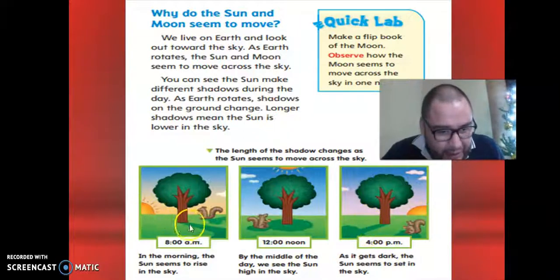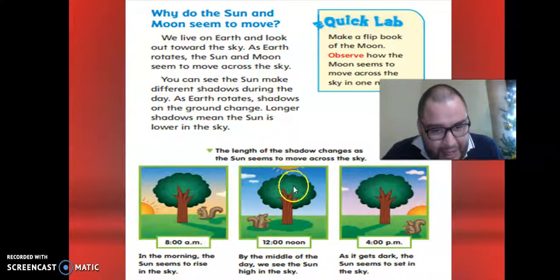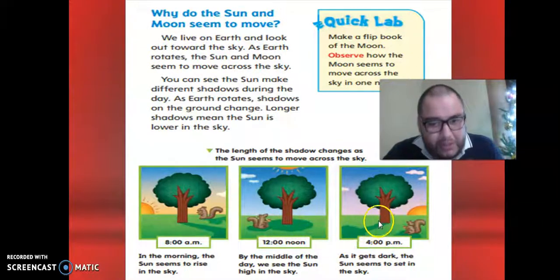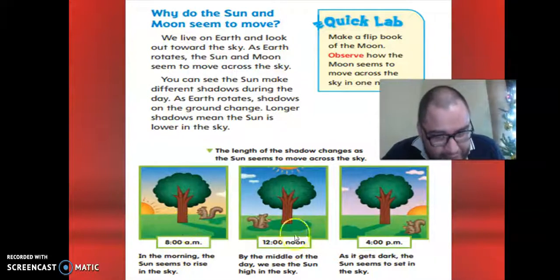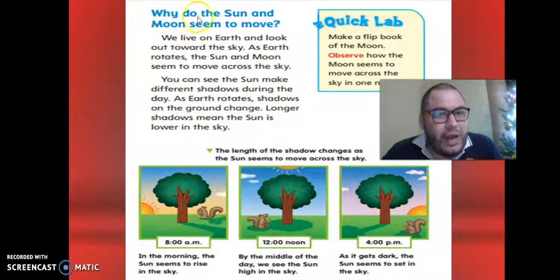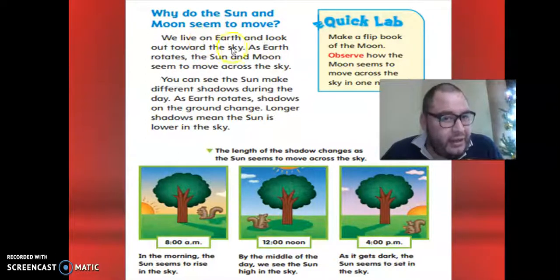The Sun is going to dissolve in one part. In the midday, for example, the shadow is on the tree. And in the afternoon, the shadow moves. In this case, it's at 8 a.m., at 12 noon, and at 4 p.m. What do the Sun and Moon seem to move? When we live on Earth and look towards the sky, as Earth rotates, the Sun and Moon seem to move across the sky.